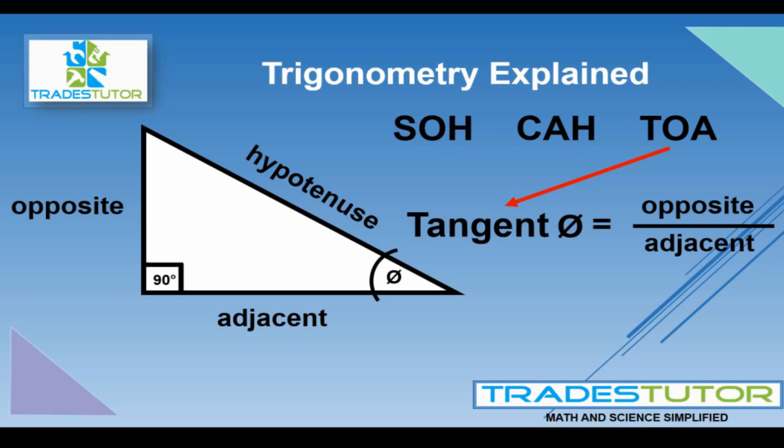Or if you knew the two sides, you could find the angle, or the reverse. So you need three variables. And the whole idea here is to be able to find the relationship between all of them. And this works for all angles.